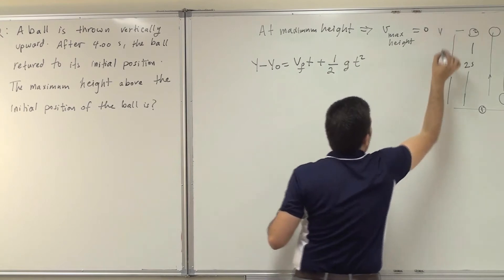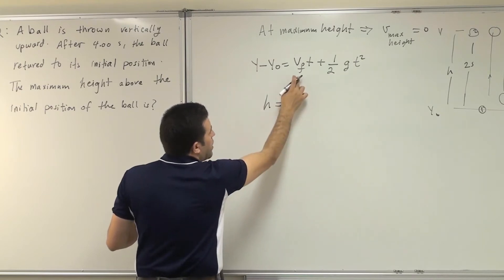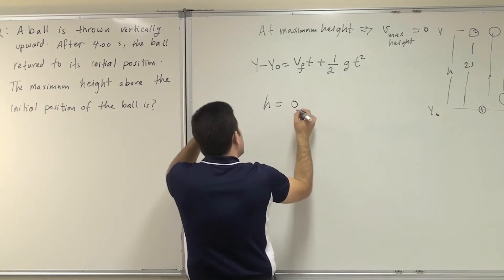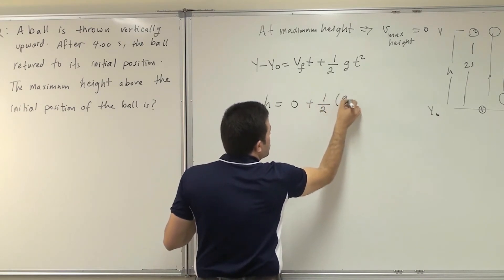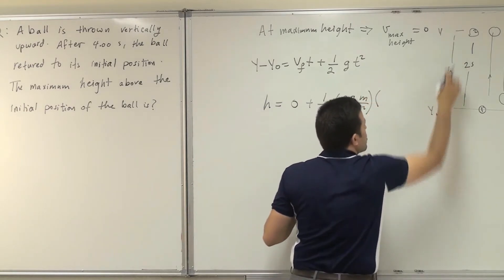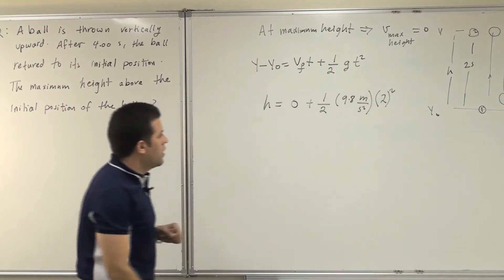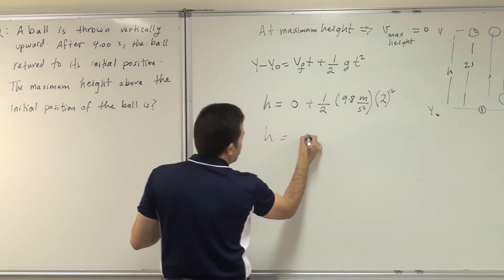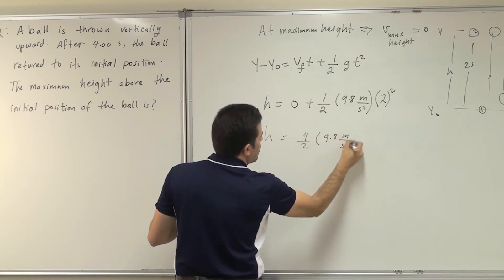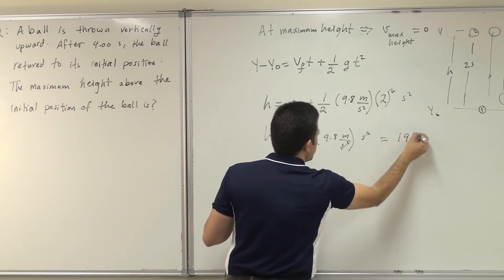The final velocity at maximum height is zero, multiplied by t is zero. Plus half g, which is 9.8 meters per second squared, multiplied by the time for this stage of the trip, which is 2 seconds — not 4; 4 is for the whole trip — t squared. Solving this, h equals one half times 9.8 times 4, which gives 19.6 meters.